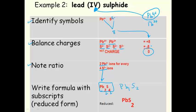But by convention, we don't write this 1. So the final formula for lead (IV) sulphide is PbS2.